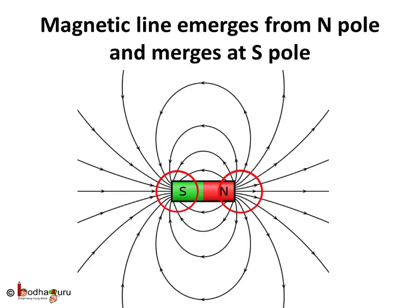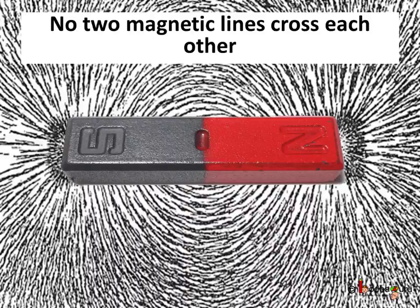Now, the field lines cannot cross each other as they represent the direction of the magnetic force. So, if the two magnetic lines cross each other at any point, it would mean the magnetic force has two directions there which is not possible. And hence, the magnetic lines do not cross each other.